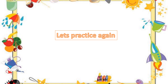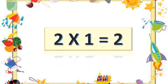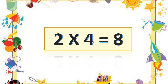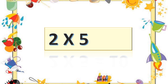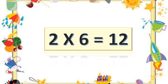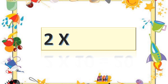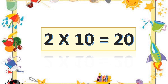Let's practice again. Two ones are two. Two twos are four. Two threes are six. Two fours are eight. Two fives are ten. Two fives are ten. Two sixes are twelve. Two sixes are twelve. Two sevens are fourteen. Two sevens are fourteen. Two eights are sixteen. Two eights are sixteen. Two nines are eighteen. Two tens are twenty. Two tens are twenty. Whee!